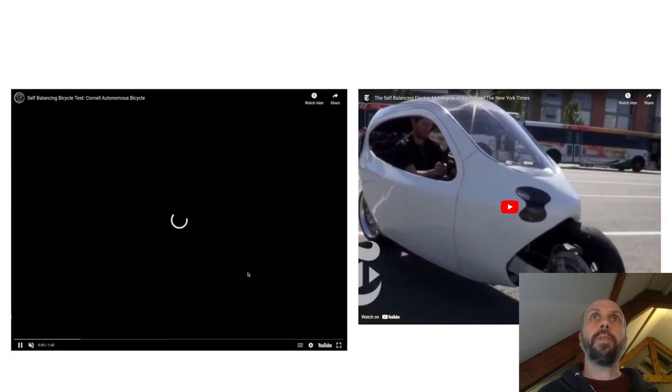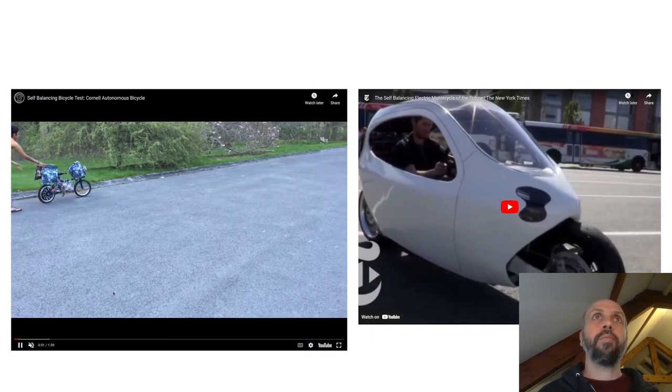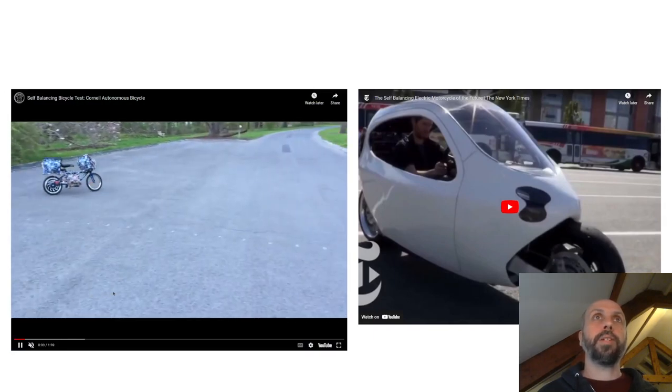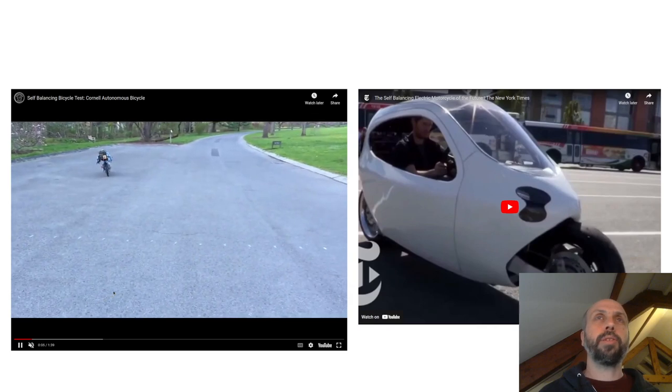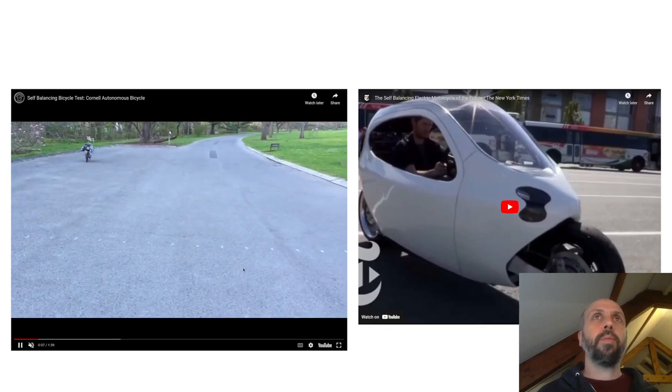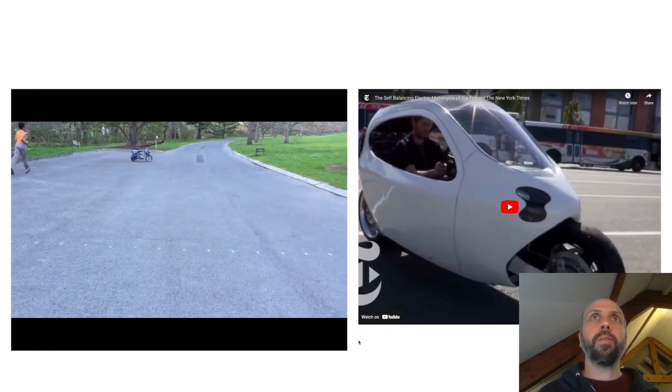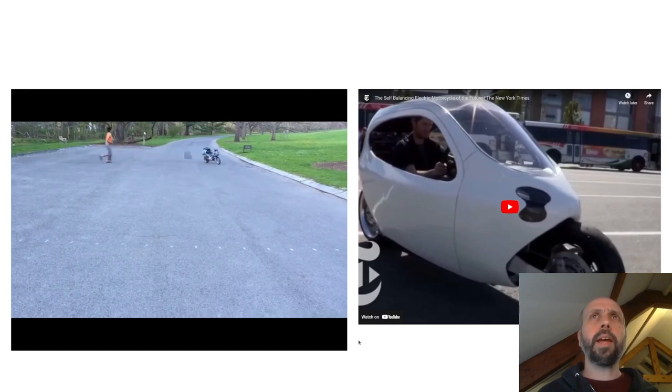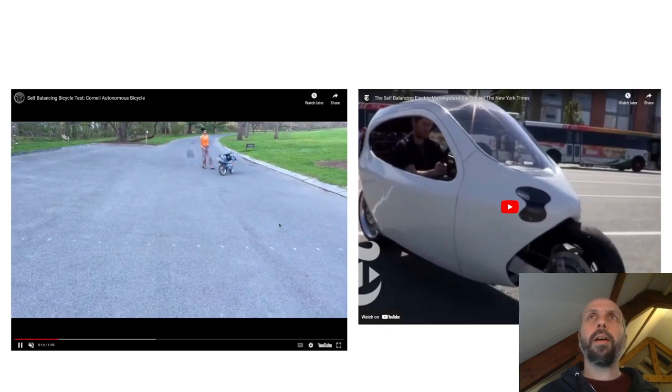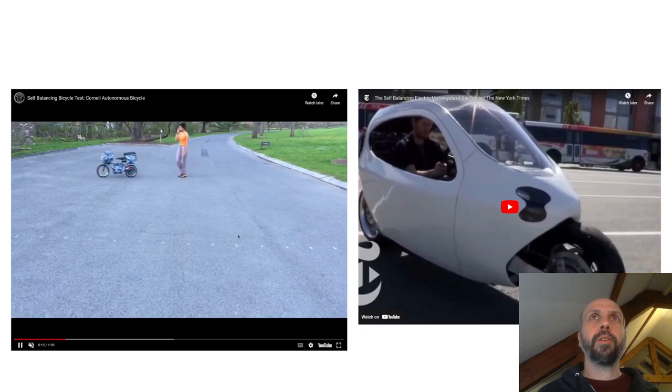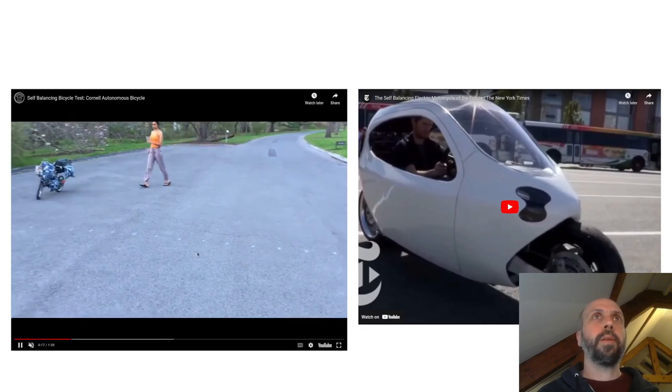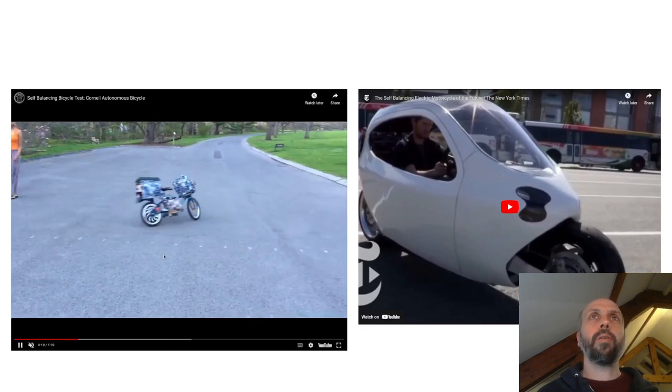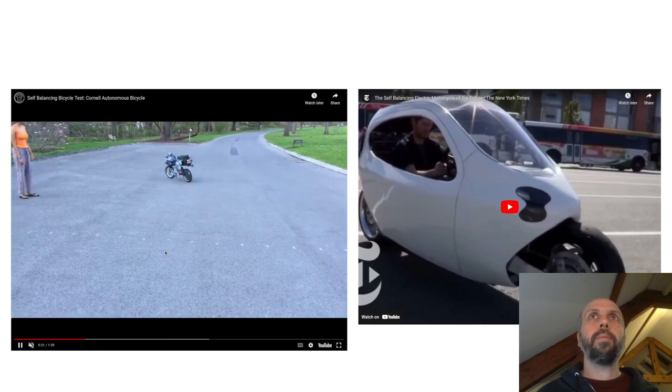There's one more. This is the Cornell self-balancing bicycle project. So this is bachelor students at Cornell. And they've been working on this project over some years. And it's actually now a little spinoff company where they're trying to figure out some ways to maybe commercialize some of the ideas there called Wheel.